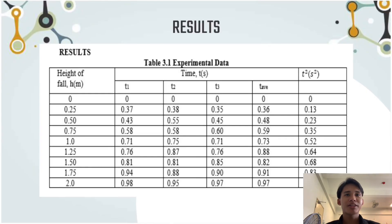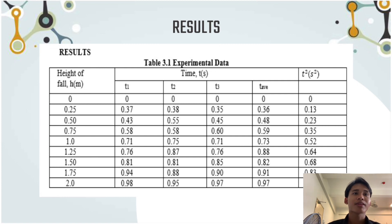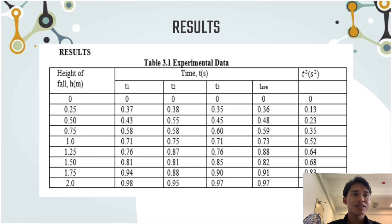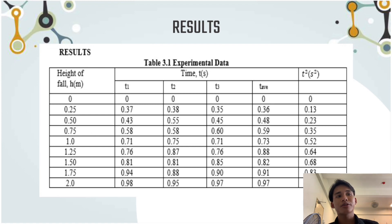Assalamualaikum warahmatullahi wabarakatuh, my name is Mamat Haris. Here are the results we got from our experiment on measuring gravitational acceleration. The first variable is height of fall, denoted as h, measured in meters. We measured heights on the wall where each point increases by 0.25 meters. We also recorded the time taken, with each time measurement taken at least three times to get accurate data.